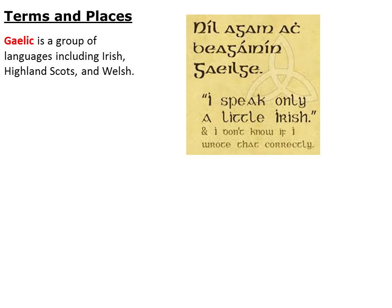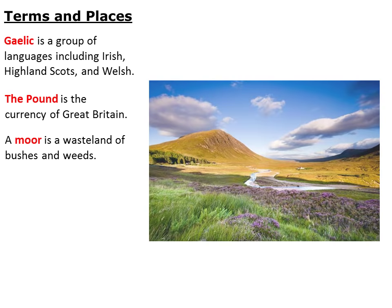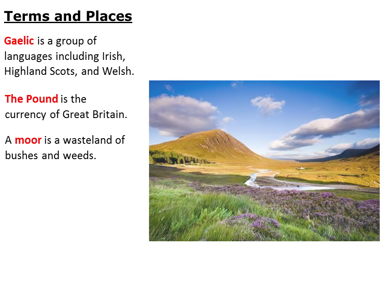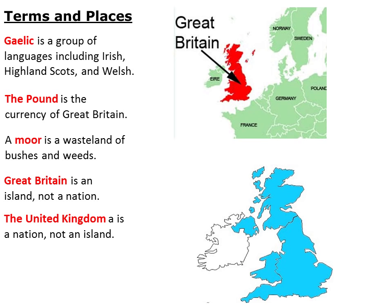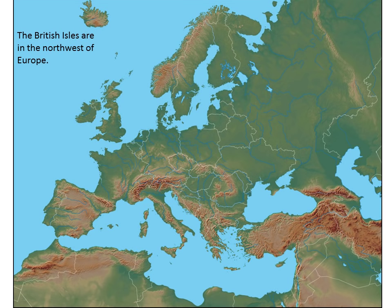Gaelic is a group of languages, including Irish, Highland Scots, and Welsh, among others. The Pound is the currency of Great Britain. A moor is a wasteland of bushes and weeds. Great Britain is an island, not a nation. The United Kingdom is a nation, not an island. London is the largest city in Western Europe.